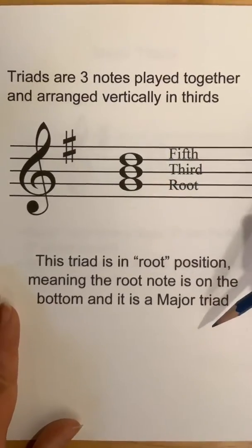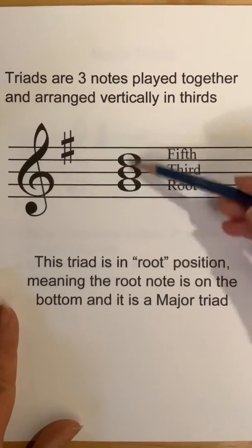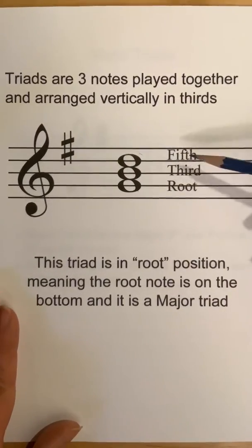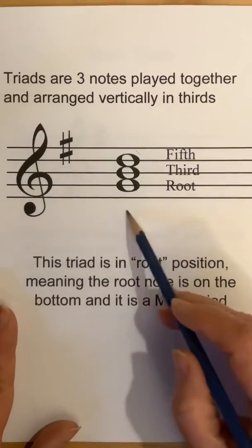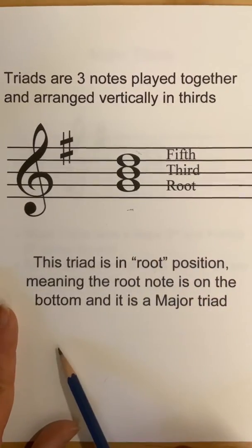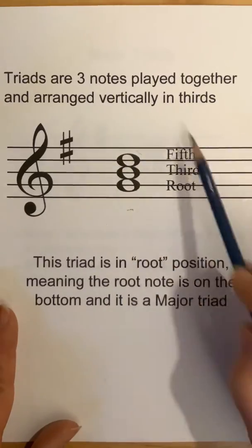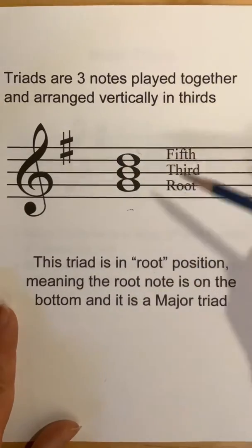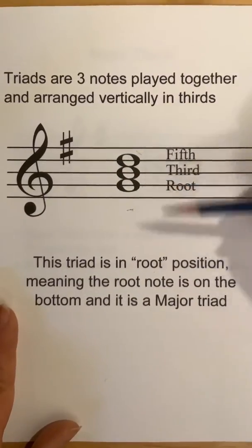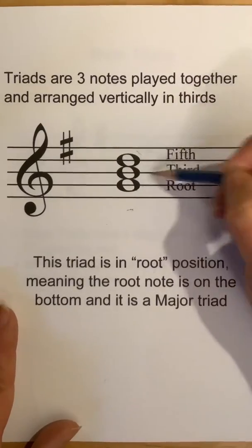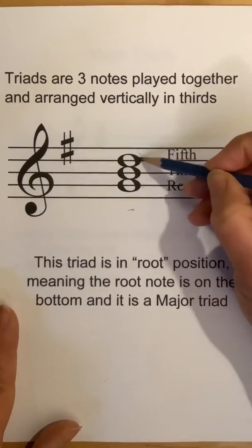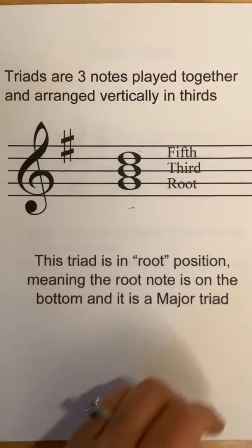I call it snow person position. When it's in root position like this, you can have line-line-line or space-space-space. This triad is in root position, meaning the root note is on the bottom, and this one is a major triad. We call the bottom note root. When it's in the snow person position, we call the middle note the third and the top note the fifth. So: root, third, fifth. Really important.